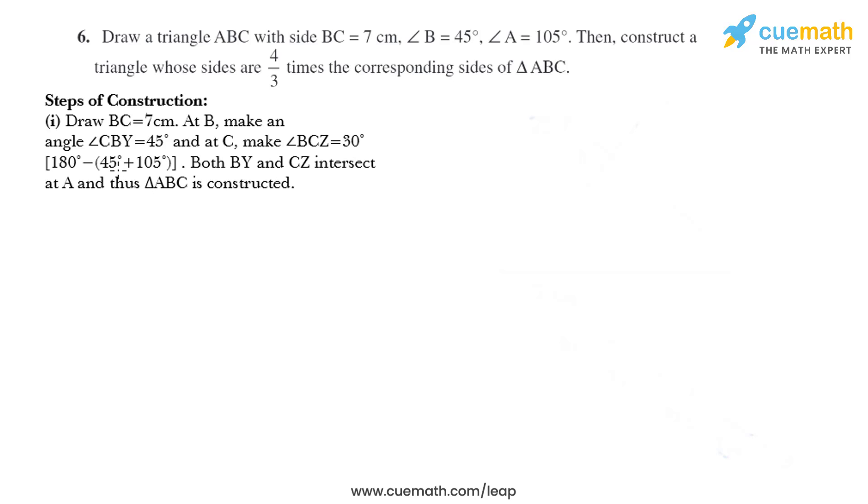Let's start with the steps of construction. We need to draw BC that equals 7 centimeters, and at B make an angle CBY equal to 45 degrees, and at C make an angle BCZ equal to 30 degrees.